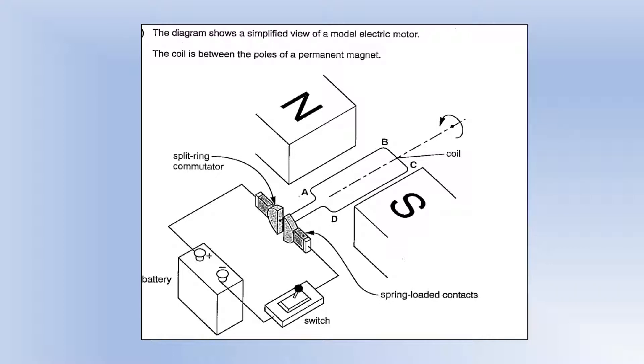The diagram shows a simplified view of a model electric motor. The coil is between the poles of a permanent magnet. So before we actually go into the question, let's actually use Fleming's left hand rule on this. So the conventional current is going to be going from A to B because it comes out of the positive side of the battery and then come from C to D back to the negative terminal. So the field goes from north to south. Conventional current is going from A to B. So you can see we'd end up with a downward force on side AB. If we do it for CD, the field is still going from north to south. The current is now going from C to D. So you can see your thumb is pointing upwards. We've got a force that way. And they're both acting to rotate it in that anti-clockwise direction from this perspective.